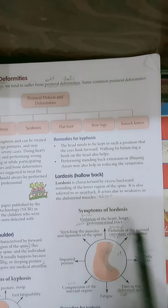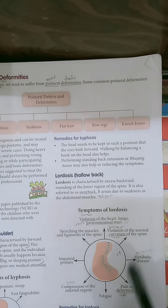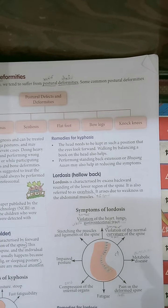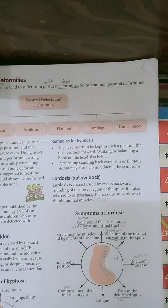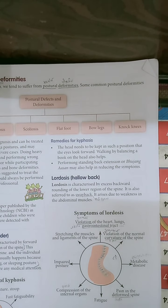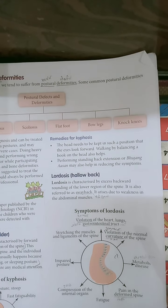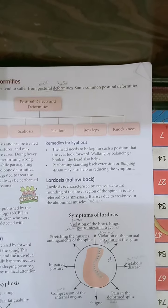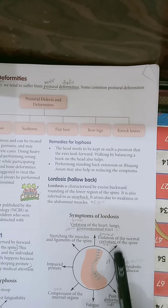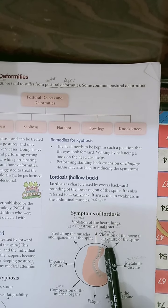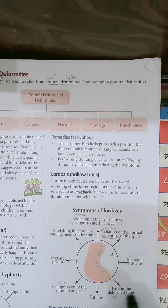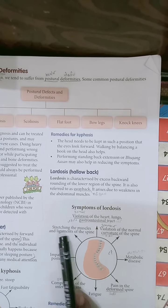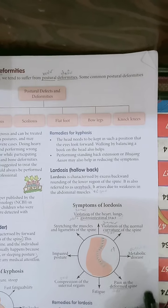Lordosis is caused by weakness in the abdominal muscles. Remedies include crunch rack exercises, yoga, and stretching the abdominal muscles. Symptoms include violation of the normal curvature of the spine, metabolic disease, pain in the spine, fatigue, compression of internal organs, impaired posture, and stretching of the muscles and ligaments of the spine.